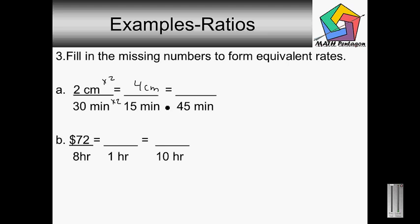Then fifteen goes into forty-five how many times? Three times. And then we multiply three on the top as well: four times three is twelve. So we have twelve centimeters over forty-five minutes. That would be the final answer to this problem right here.